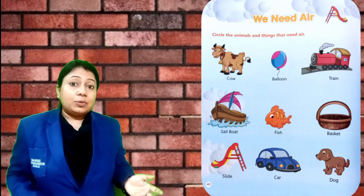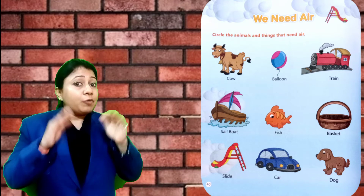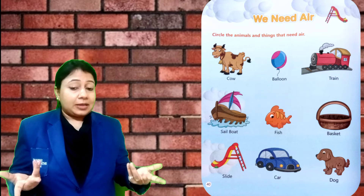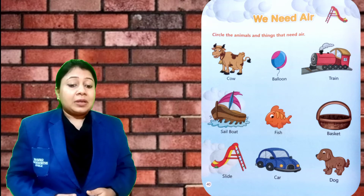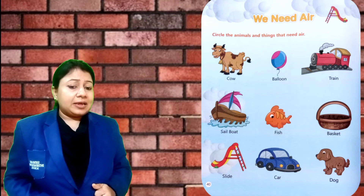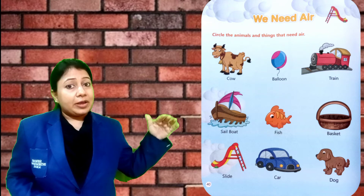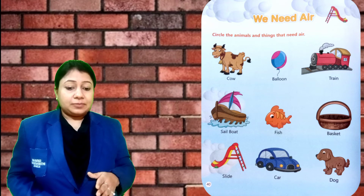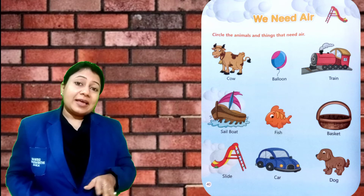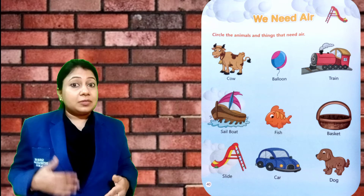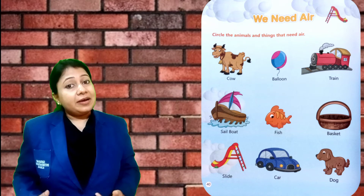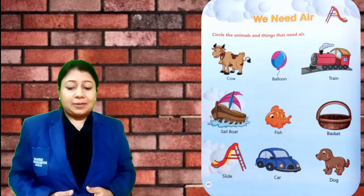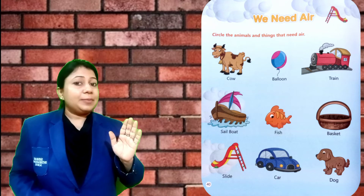Next — balloon. When air enters a balloon, it comes to its size. So balloon also needs air. Next — train. Train needs air because it crosses through air to move. Next — sailboat. A boat also needs air to move. Next — fish. Fish is also a living thing and it also needs air. Next — basket. No, basket does not need air. Next — slide. Slide also has no requirement of air.